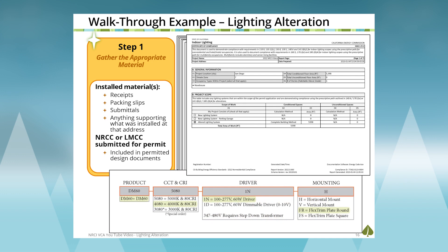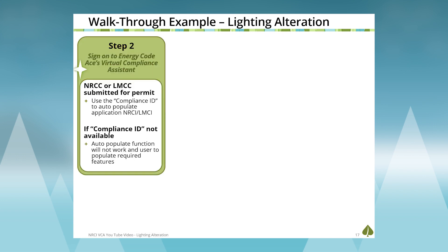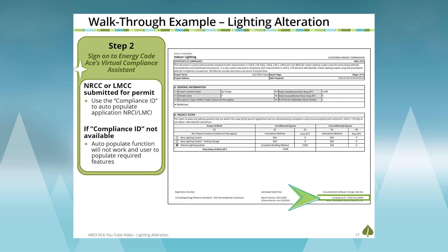Here is our approved submittal supporting our 60-watt LED retrofit kit. We'll make sure to have this on hand when filling out the information in the VCA. We're going to grab that compliance ID, which is always found in the lower right-hand corner of the Certificate of Compliance Form. Be aware you need to use all of these numbers, including the dashes, for this to work appropriately.